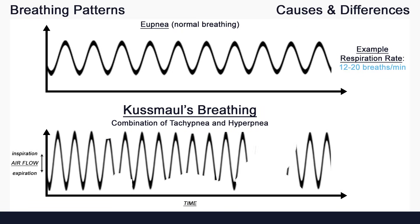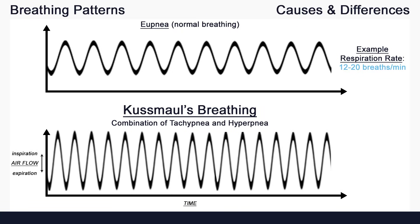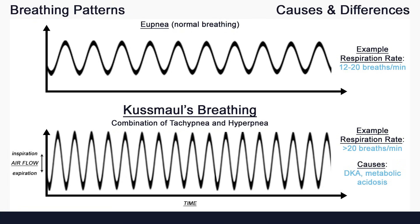Kussmaul's breathing is a type of hyperventilation, and it is the combination of tachypnea and hyperpnea — meaning a rapid respiration rate with deep breaths. Kussmaul's breathing can occur in diabetic ketoacidosis, or DKA, and metabolic acidosis. The rapid, deep respirations help to expel more ketones and carbon dioxide, decreasing the acidity of the blood.